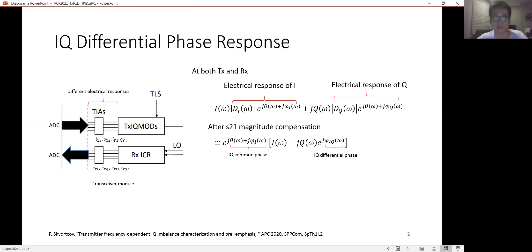You know that I and Q have different electrical responses. Even when we compensate the S21 magnitude, what is remaining is the IQ common phase as well as the IQ differential phase. In this presentation, we are going to propose a method to extract the IQ differential phase at the transmitter and the receiver.